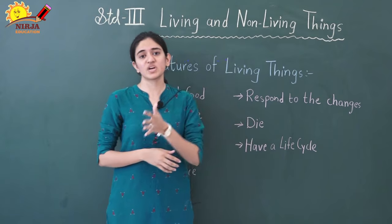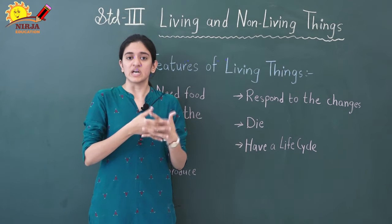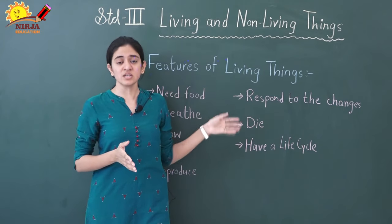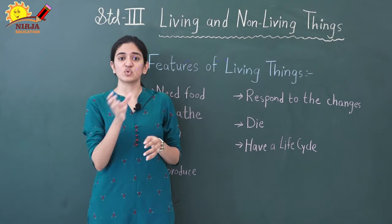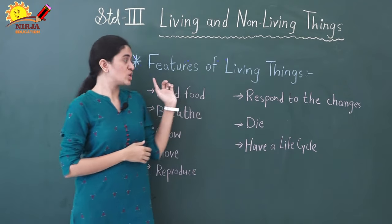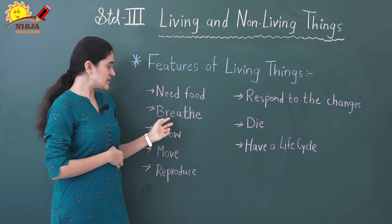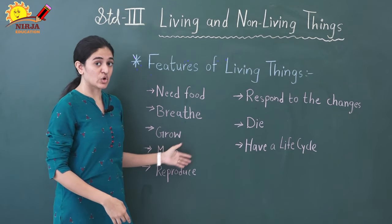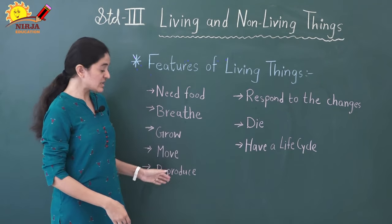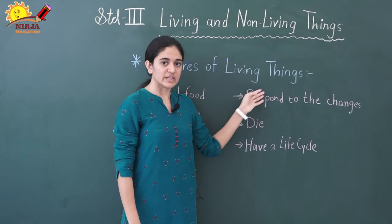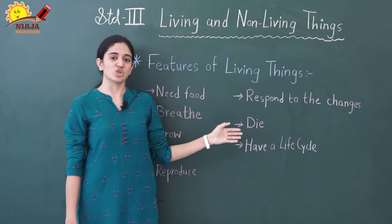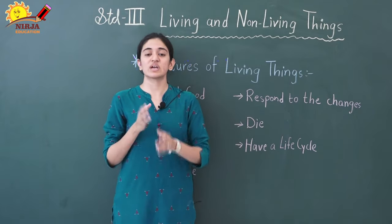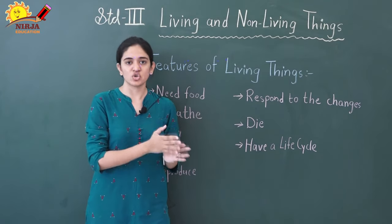The opposite of all these features applies to non-living things. If someone asks you to differentiate between living and non-living, you can list all the living features and add 'do not' — non-living things do not need food, do not breathe, do not grow, do not move, do not reproduce, do not respond to changes, do not die, and do not have a life cycle.